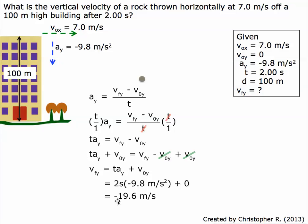This gives us negative 19.6 meters per second. Looking at the significant figures—7.0, 9.8, 2.00, 100—the minimum is 2 sig figs. So our answer is negative 20 meters per second.